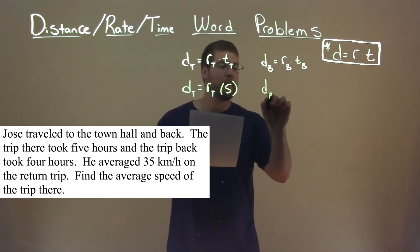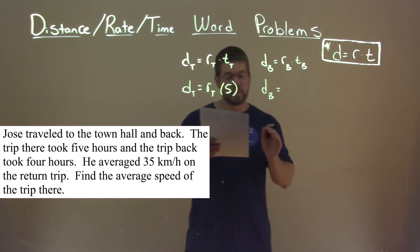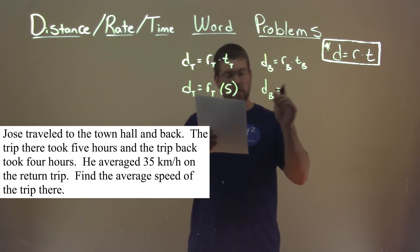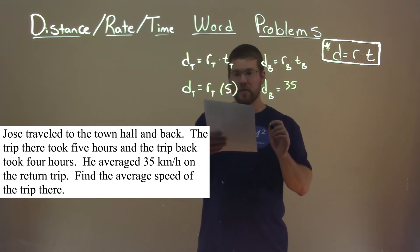We don't know the distance there, and we don't know the distance back either. But they tell us that the average speed on the return trip back home was 35 kilometers per hour, and it took a total of four hours to get back.